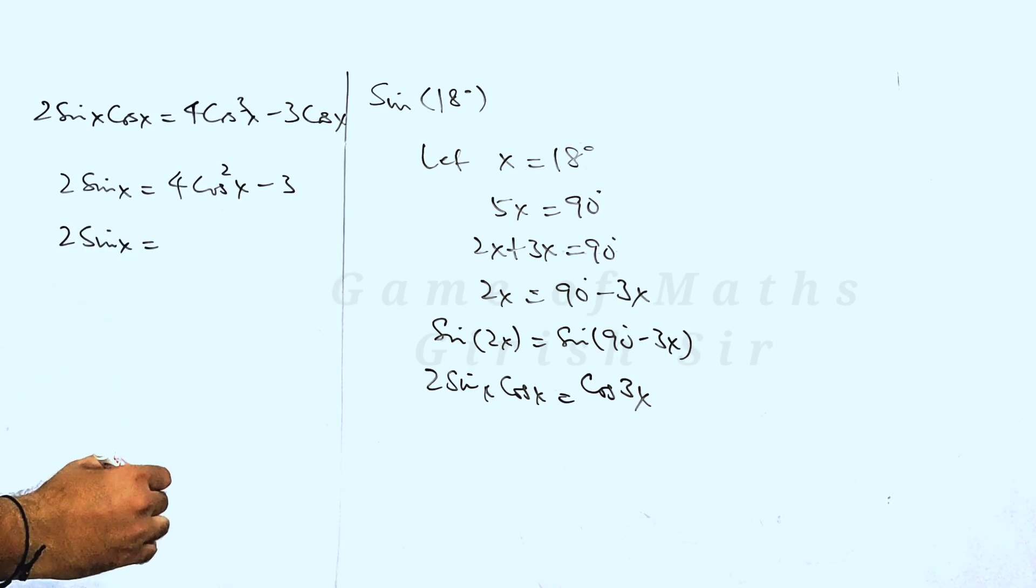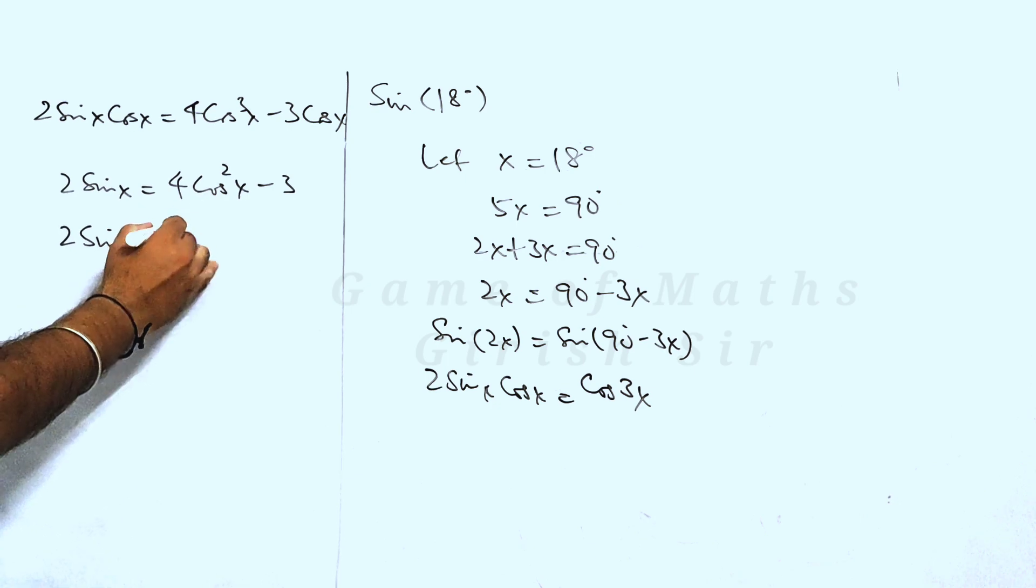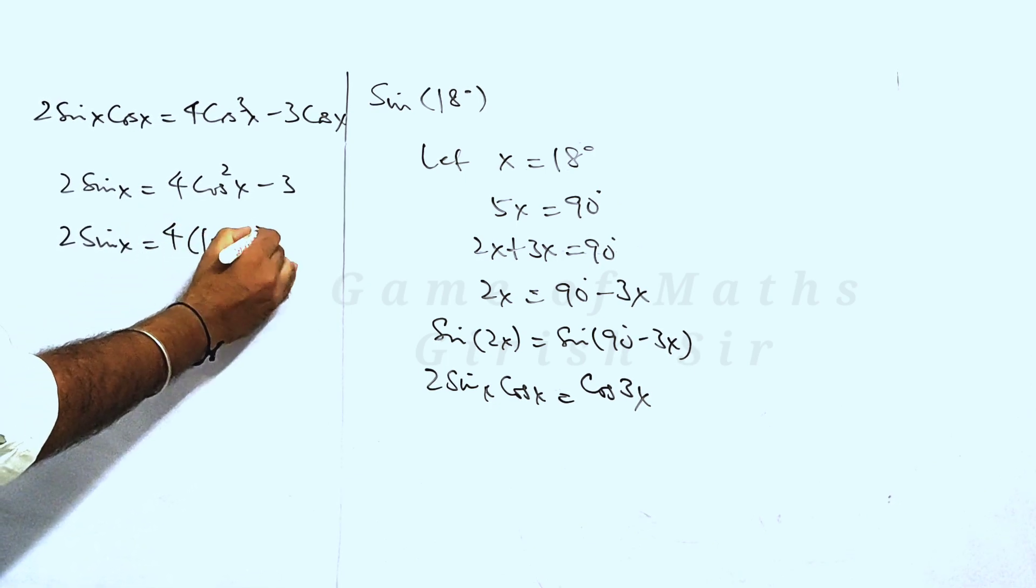Now using the identity sin squared theta plus cos squared theta equals 1, we can write cos squared x as 1 minus sin squared x.